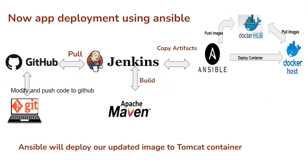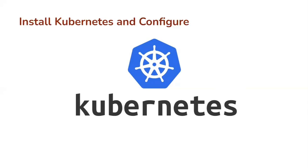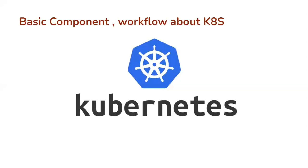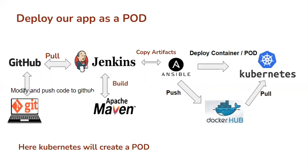Kubernetes has the power of self-healing and scaling. That's why we deploy our application not on containers directly, but we deploy our application on a pod. A pod is the smallest unit of Kubernetes. In this playlist we will also see the basic components of Kubernetes and the workflow of Kubernetes. After that we will integrate our Kubernetes with Ansible. Now our application will be deployed on a pod on a Kubernetes platform. Our complete CI-CD pipeline will look like: Jenkins pulls code from GitHub, Maven builds the code and sends it to the Jenkins server, Jenkins copies the artifact to the Ansible server, Ansible creates an image using a Dockerfile and pushes the images to Docker Hub, then Ansible gives instructions to Kubernetes to deploy a pod to run the application.